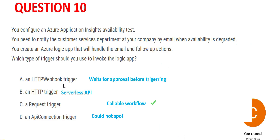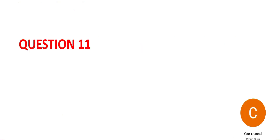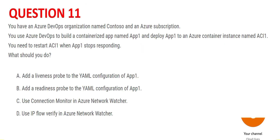The Webhook trigger is primarily used when you have a workflow where you wait for a previous workflow to finish. But here we have to send alerts or notifications if the Application Insights availability is below par. So the Request trigger is the final answer. If you have a different opinion, please put it in the comments. Let's look at Question 11.